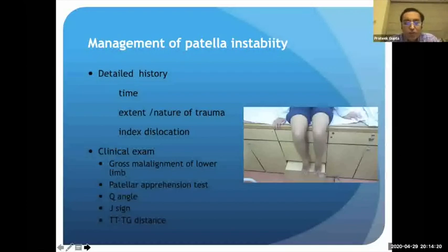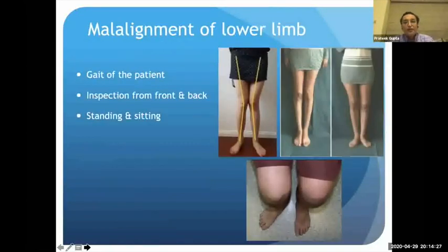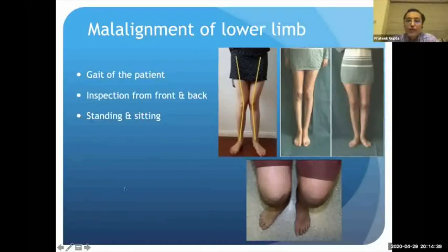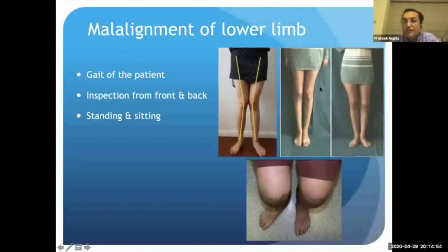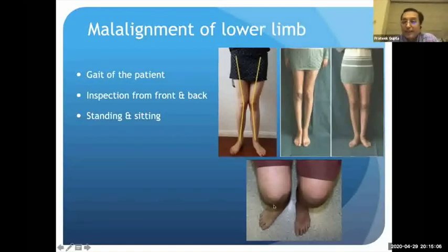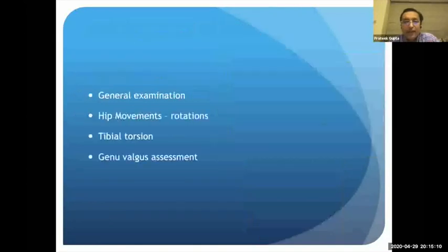Clinical examination starts from the moment the patient enters the clinic. We observe the patient's gait, and inspect from the front, sides, and back in both sitting and standing positions. Significant genu valgum puts the patella at a disadvantage. Squinting of the patella indicates a rotational problem of the femur or tibia. If the foot is not in the correct angle when sitting, this indicates a tibial rotation problem. Hip movements must also be assessed.